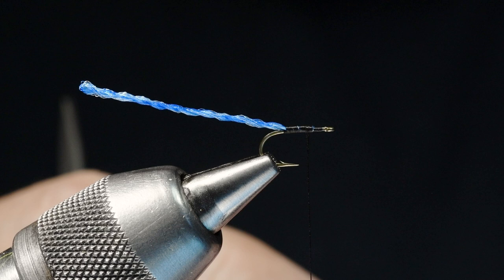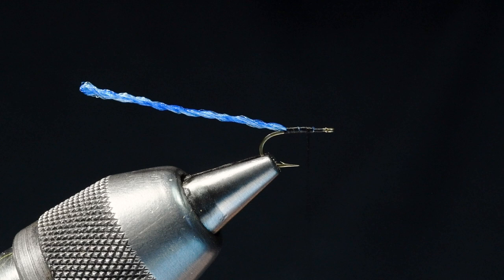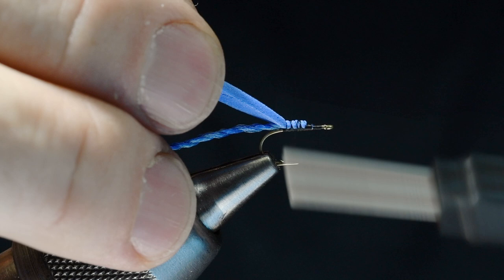Then I've got a piece of two millimeter foam here that I've cut about one millimeter wide, so fairly thin. And I'm going to back my thread up here a bit. And I'm going to catch this and wrap over it right up to the base of the abdomen section. This is going to be our wing case, as it were. It's also going to be our parachute post.